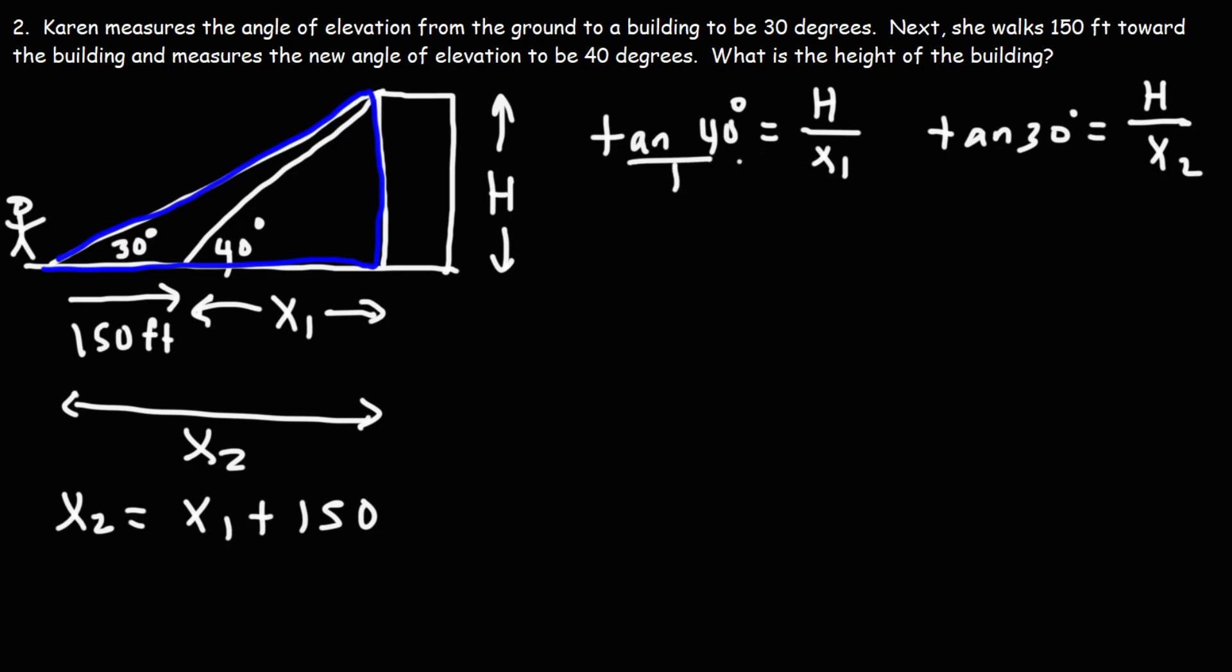Now if we cross multiply, here we'll get h is equal to x1 tan 40. And if we put this over 1 and cross multiply, we'll get that h is equal to x2 tan 30. So because both of these expressions are equal to h, that means they are equal to each other. So x1 tan 40 is equal to x2 tan 30.